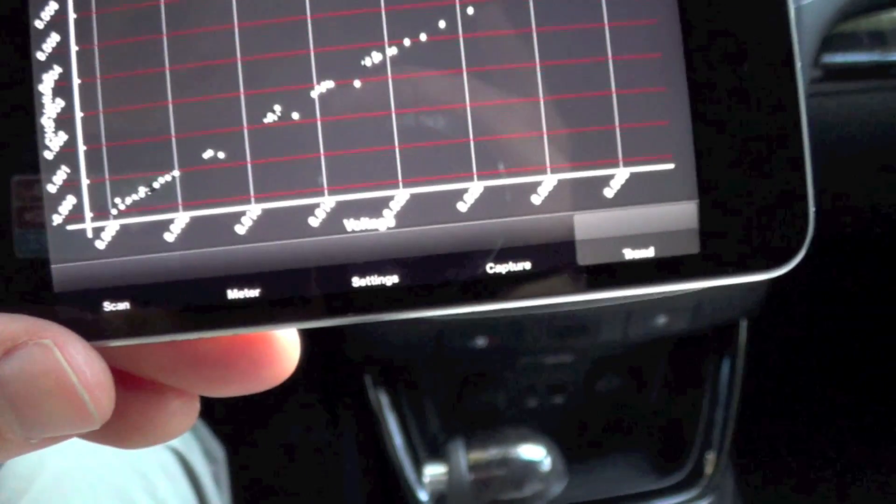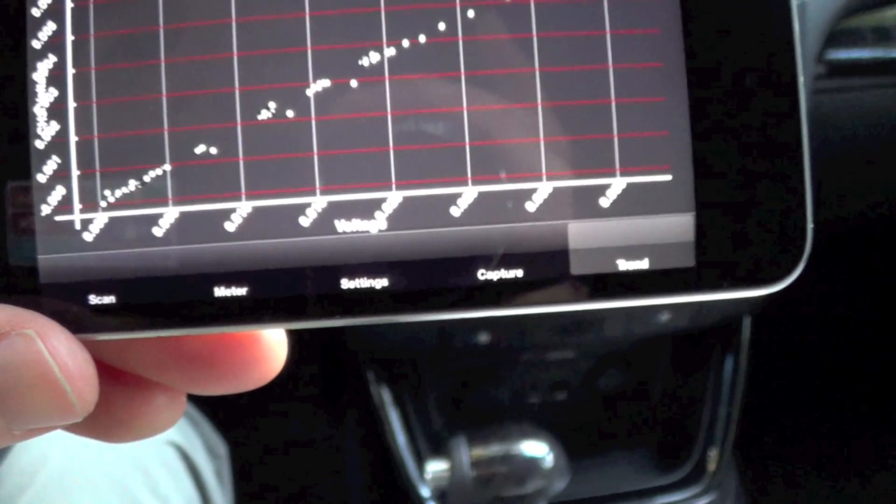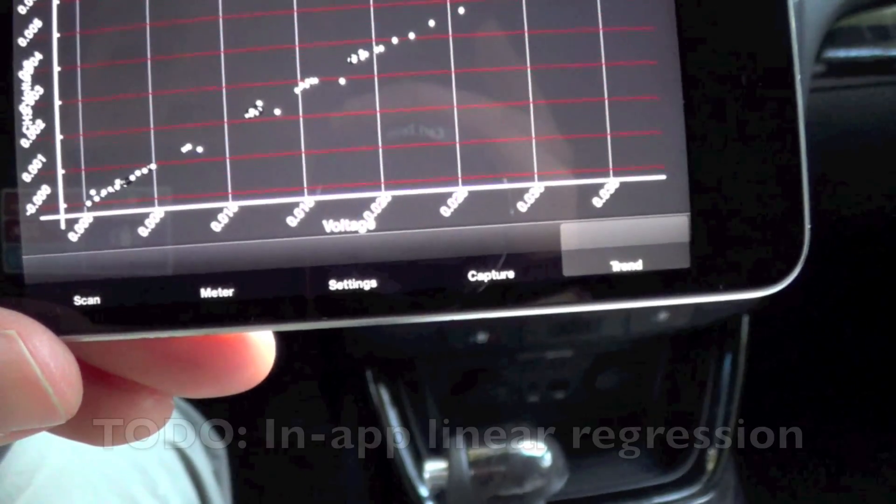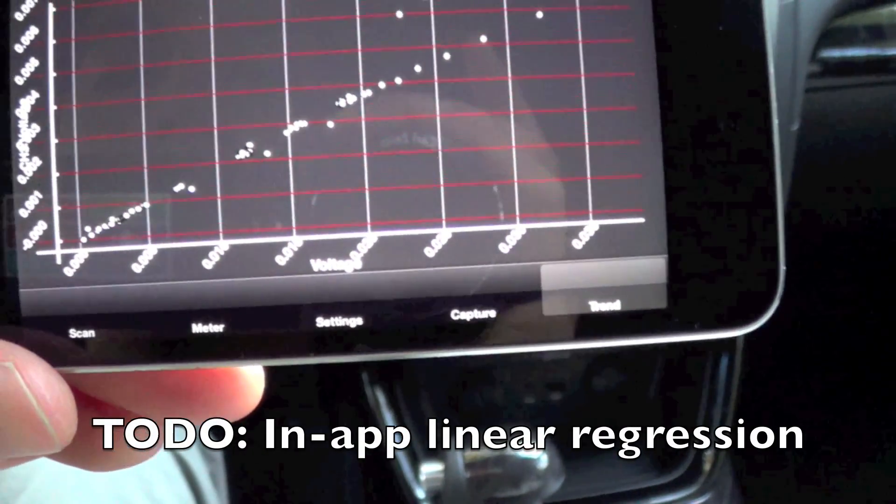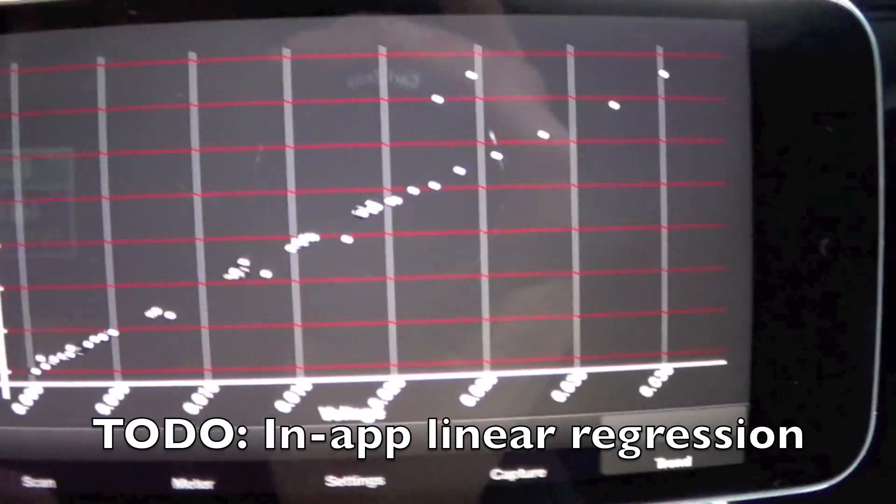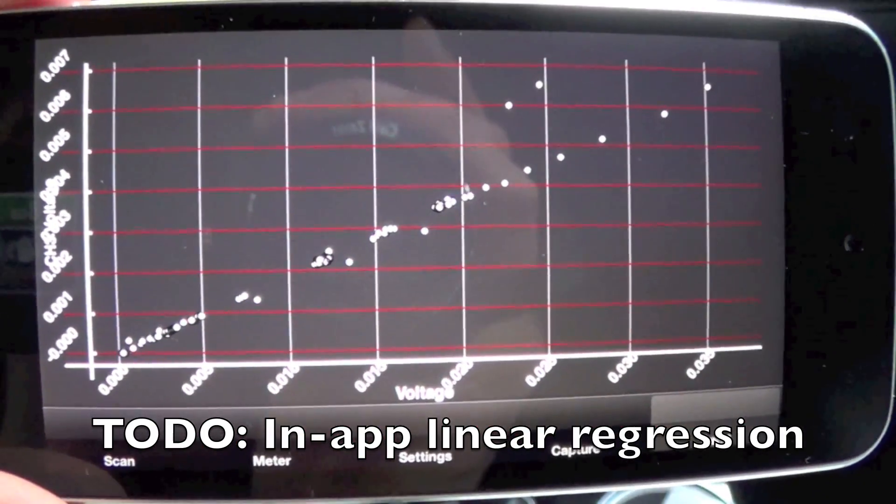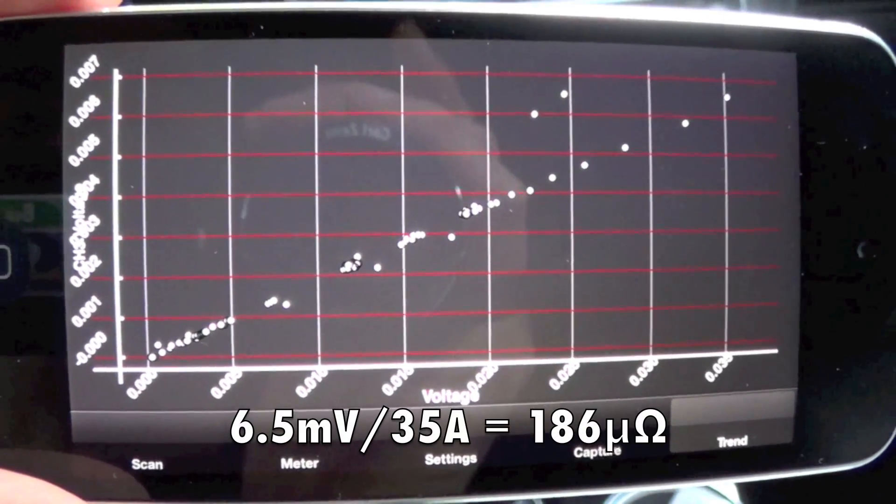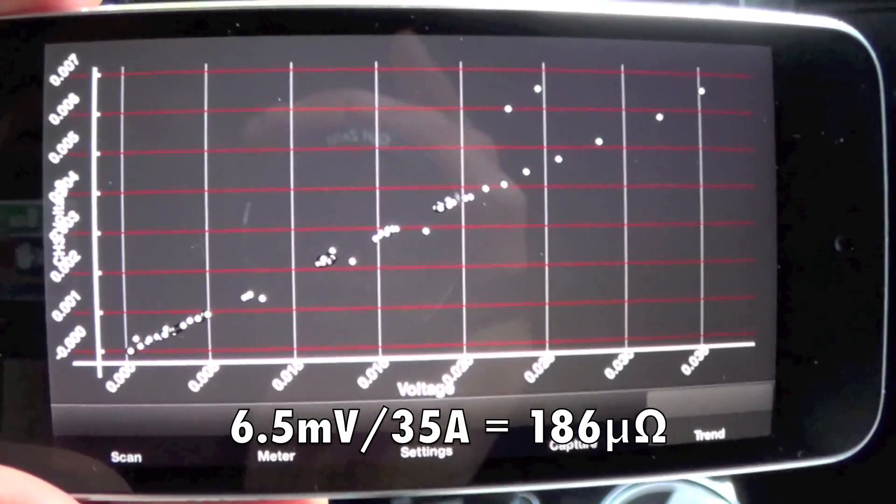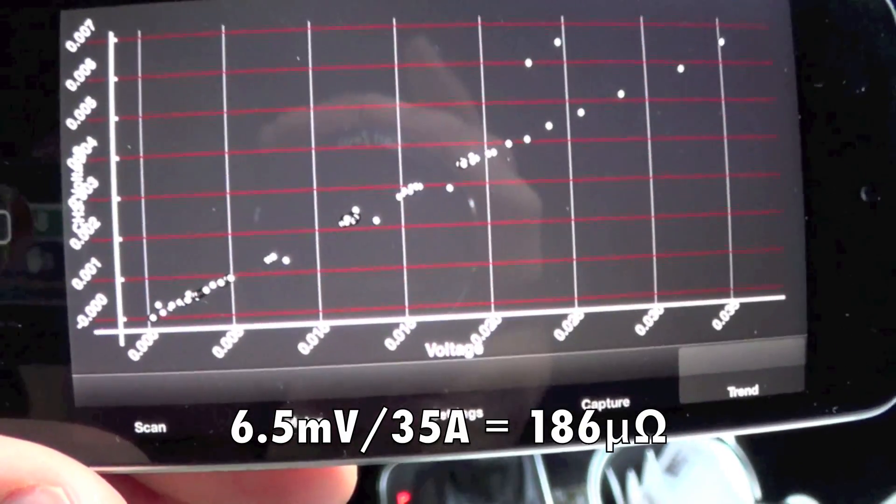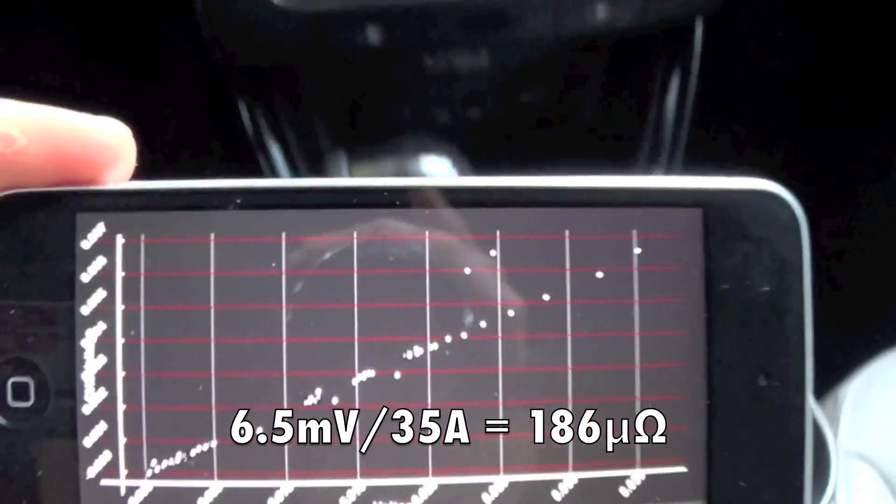So just from turning on the peripherals, you can already see very clearly the slope of that line. What's that look like... some quick mental math here. It's about 35 amps for seven millivolts across the shunt, so very roughly, that's about 200 micro-ohms that the shunt resistance is.